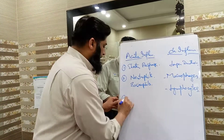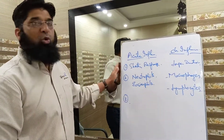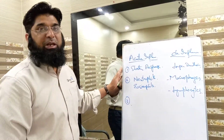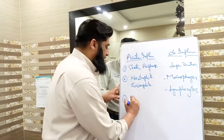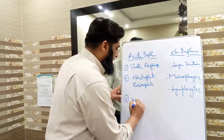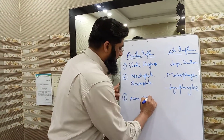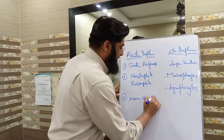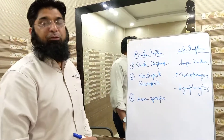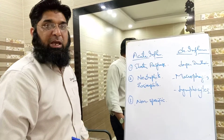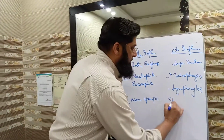Number three: acute inflammation is non-specific in nature. On the other hand, chronic inflammation is specific in response.